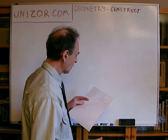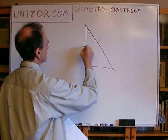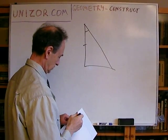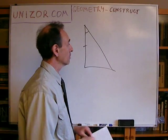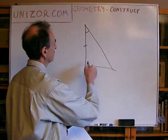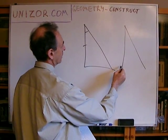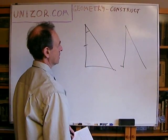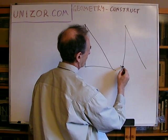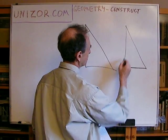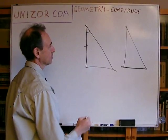Construct the right triangle by a cathetus and the acute angle it forms with the hypotenuse. So we have this cathetus and this angle. If we know some kind of angle, we should start with that angle. I'll build the given angle first. On one leg of the angle I'll mark a segment congruent to the given leg. From that endpoint, I'll construct a perpendicular to the other side of the angle, and wherever it crosses that other side — that's the third vertex of the triangle.